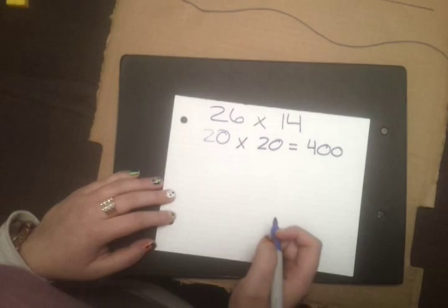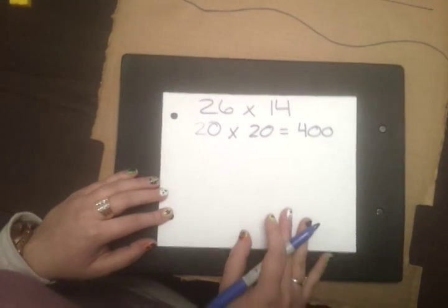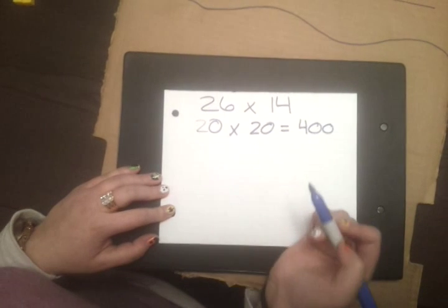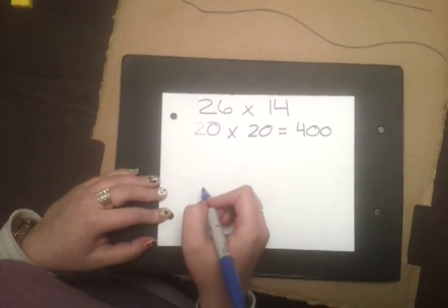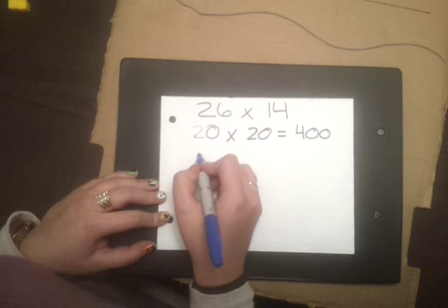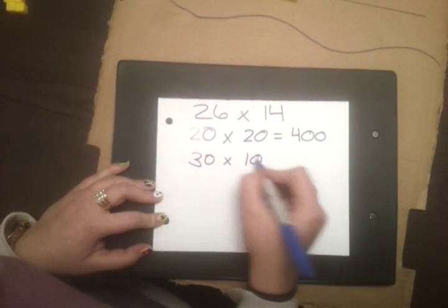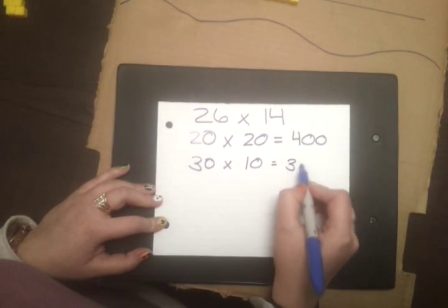So, this is a little bit higher than our solution, so we can try another method, which is adding 4 to 26 and taking away 4 from 10, or mean 14. So, then we can go 30 times 10, which is equal to 300.